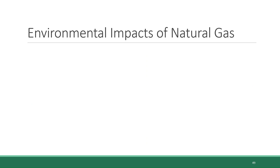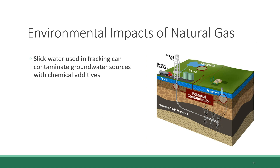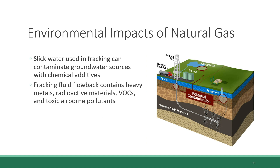Like with coal and oil, there are multiple environmental impacts brought on by the drilling and burning of natural gas. A big one is contamination. The slick water used in fracking can contaminate groundwater sources with the chemical additives included in it. In addition, the fracking fluid flowback — the slick water withdrawn back out of the well — contains a number of contaminants from underground, including heavy metals, radioactive material, volatile organic compounds, and toxic airborne pollutants.